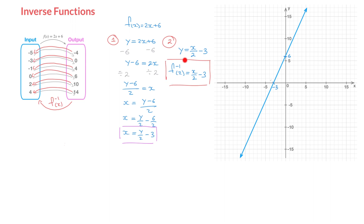Just to check that this is indeed the inverse function, let's replace x by one of the output values of f(x). If it is indeed its inverse function, it should lead us back to the corresponding input value. For instance, if I replace x by 10, the inverse function should give us 2. Replacing x by 10, we get f⁻¹(10) = 10/2 minus 3 = 5 minus 3 = 2. This confirms that we're dealing with the correct inverse function. And the two steps we've just seen can always be followed when looking for the expression of a function's inverse function.